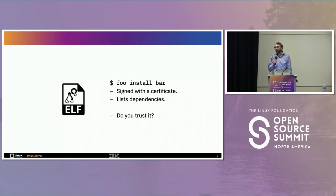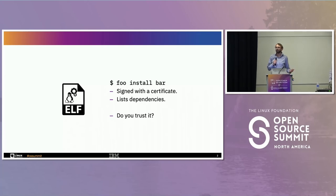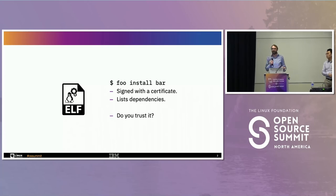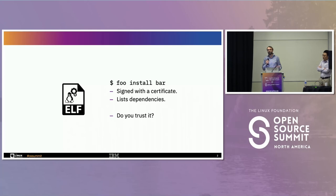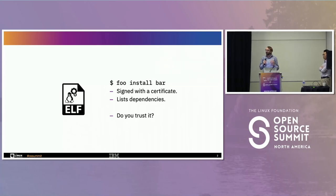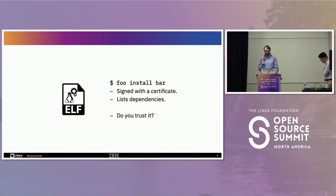One thing we've probably all done is open up a terminal, typed something like 'foo install bar' — where foo could be pip, apt, yum, etc. — and installed software without really thinking about whether we could trust it or where it came from. The software might be signed with some certificate giving some form of authenticity, it might list its dependencies, but we really don't know if we can actually trust it.